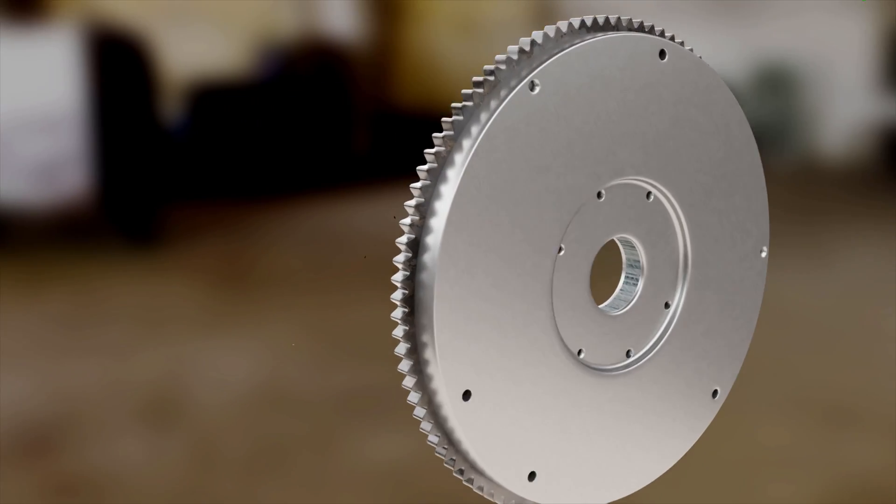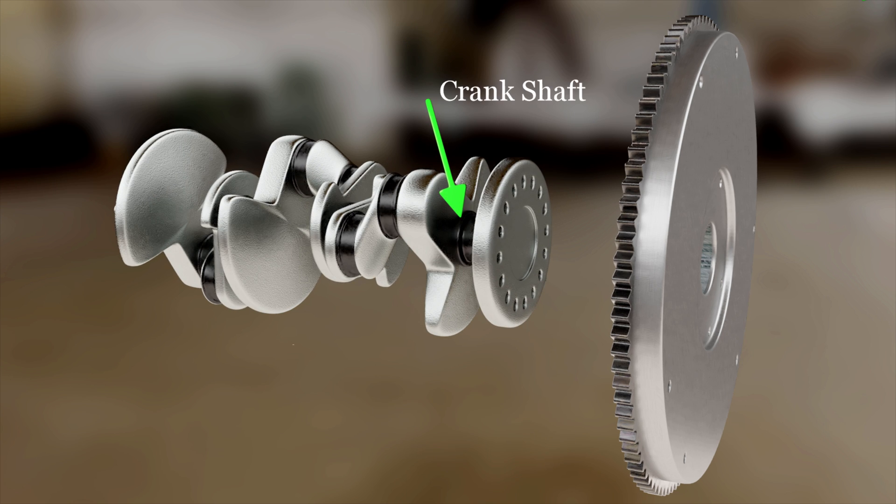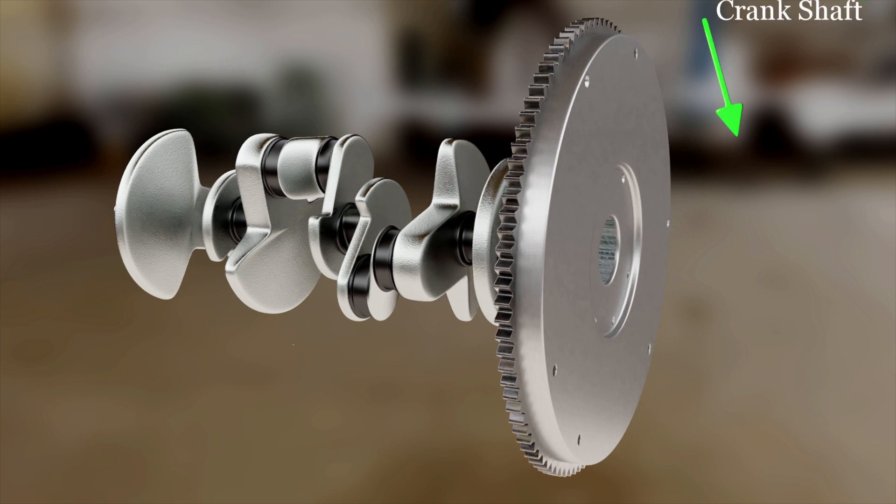A clutch consists of a flywheel which is directly mounted on the crankshaft, and thus, the flywheel will rotate all the time the engine is running.